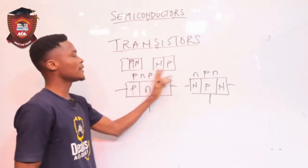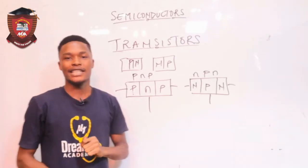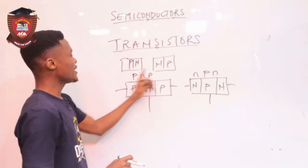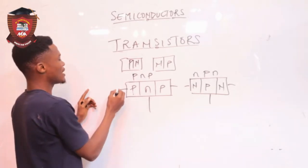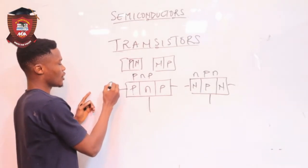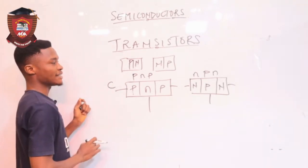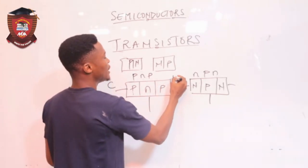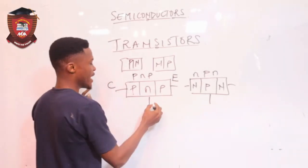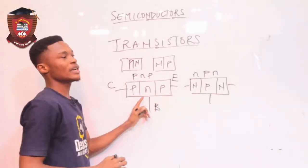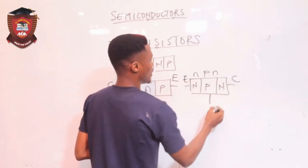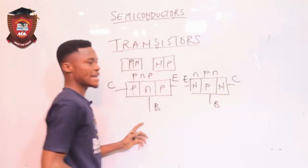The terminals of the transistor have specific names. One side is called the collector, represented by C. We have the emitter, represented by E. And then we have the base, which is always at the center. So I can call this side the emitter, this the collector, and this the base.